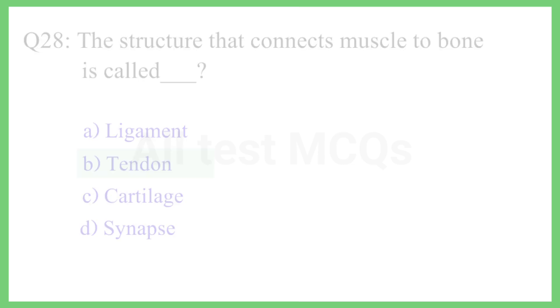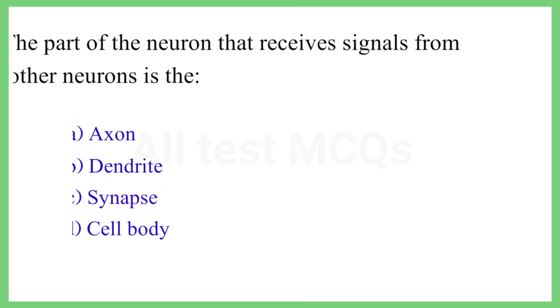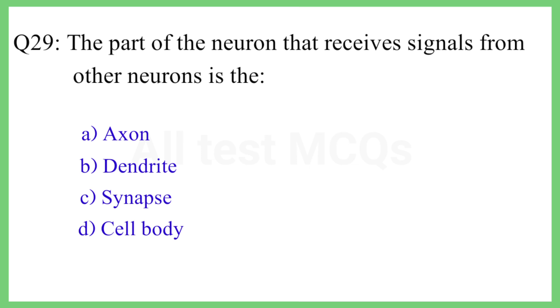Question No. 29. The part of the neuron that receives signals from other neurons is? The correct answer is Option B: Dendrite.